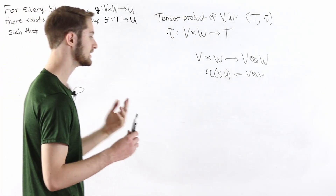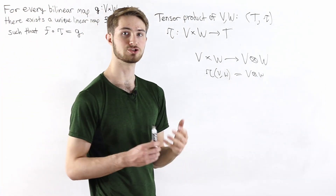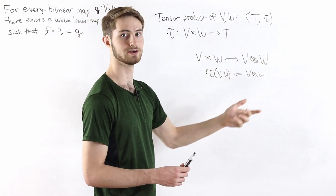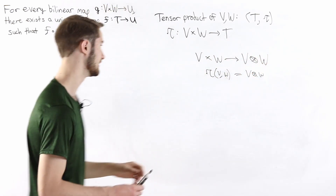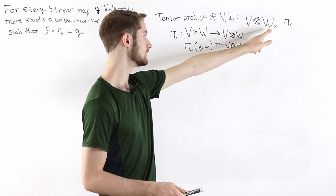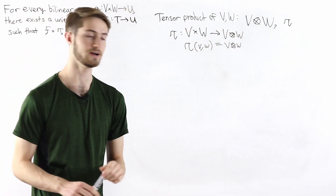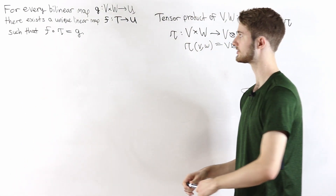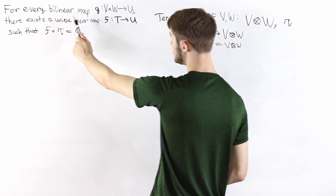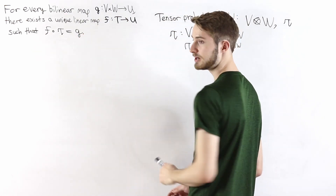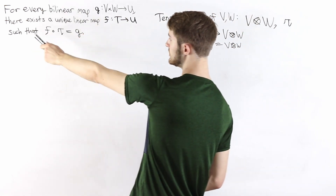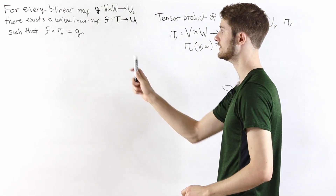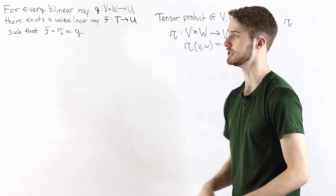The idea is we can define the tensor product more abstractly — we don't necessarily need to refer to things like pure tensors. The tensor product V tensor W along with the bilinear map tau satisfies the universal property of the tensor product, which says that for every bilinear map g from V cross W into some other vector space U, there exists a unique linear map f from the tensor product into U such that f composed with tau equals g.